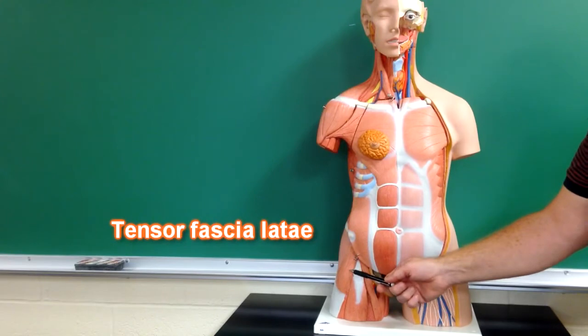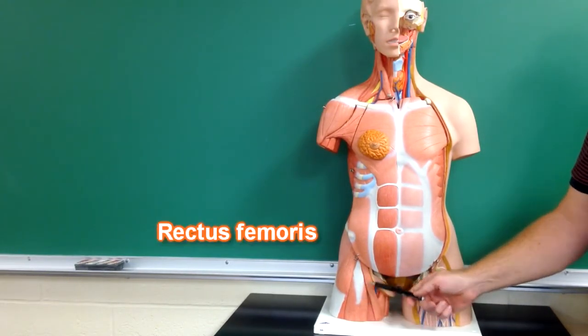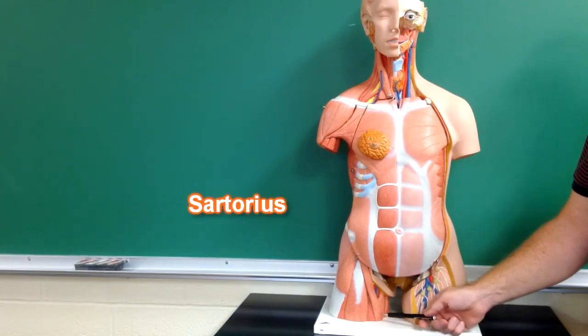Down here we have tensor fasciae. Right here we have rectus femoris. This is a sartorius muscle right here.